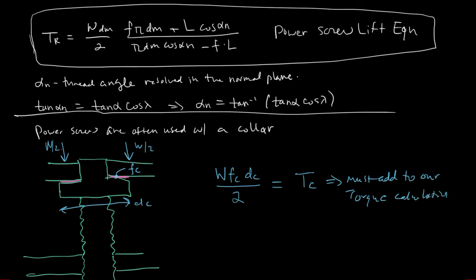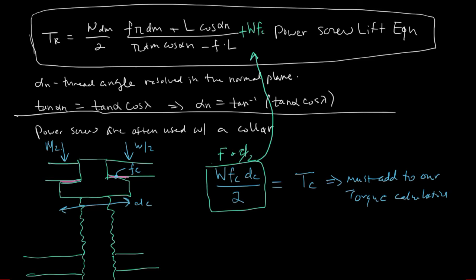This is just the torque from the collar — the weight times the friction force times the diameter over two, i.e., force times radius. This expression must be added to the thread torque when calculating the total torque required to lift an object with a collar present. This is the calculation required when raising a load.